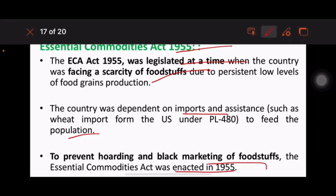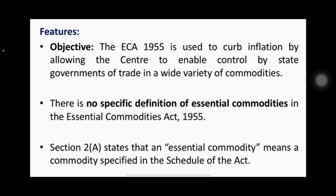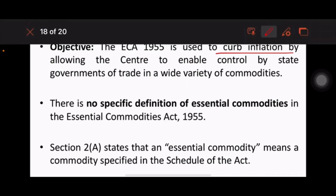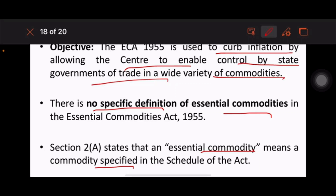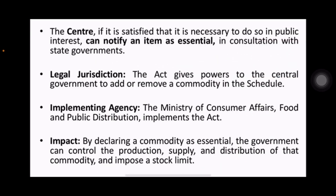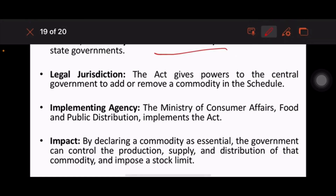The Essential Commodity Act was enacted in 1955. Its objective is to curb inflation by allowing the centre to enable control by state governments over trade in a wide variety of commodities. There is no specific definition of 'essential commodity'; Section 2A states that an essential commodity means a commodity specified in the schedule of the act. If the centre is satisfied that it is necessary, it can notify an item as an essential commodity. The Ministry of Consumer Affairs implements this act.